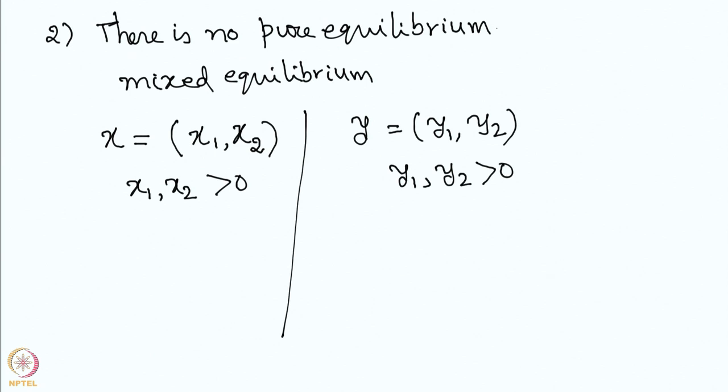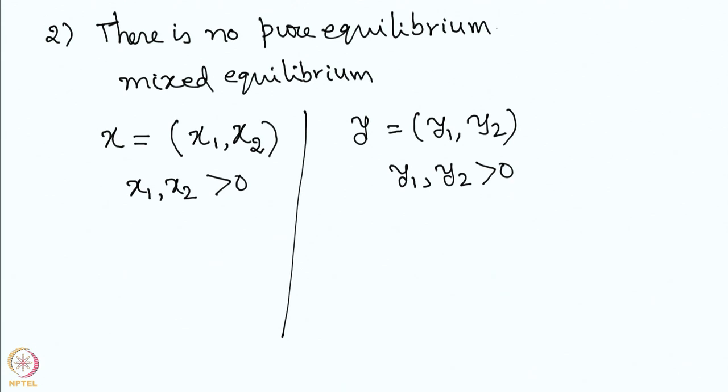You can ask: what if player 2 has a pure optimal strategy whereas player 1 does not? In fact, if that happens, player 1 would also have a pure strategy, because if player 2 is already playing a pure strategy — choosing one column — player 1 knows which row gives the better payoff. Unless they are equal, there is always a pure equilibrium. So we consider the situation where both players play mixed strategies.